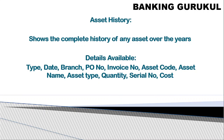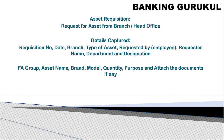To know what fixed assets are available in the organization, we capture detailed information in the system. The asset history records when the asset was purchased, how much depreciation has been done over the last four or five years, the quantity purchased, the current location — whether purchased at head office and moved to a branch, or transferred again — and whether it was disposed of. Details captured include: asset type, date, branch, purchase order, invoice number, asset code, asset name, quantity, serial number, and cost.